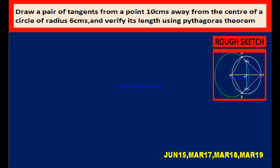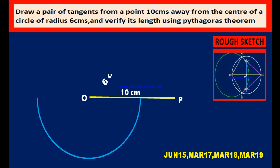Now, how to construct? Let us start from a line segment of length 10 cm, which is the distance between the center of the circle and an external point. Name it as OP. Now, take O as the center of the circle. Using compass, draw a circle with radius 6 cm.